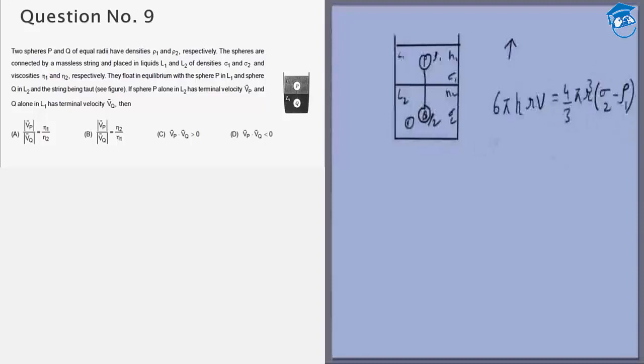From this we can get the terminal velocity. These are results you should probably know as well. It is 2R²/9η₂ times (σ₂ minus ρ₁) upwards. This is VP. Similarly, VQ will be 2R²/9η₁.